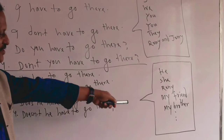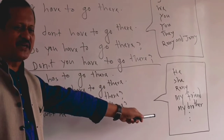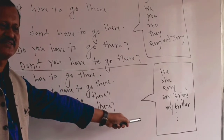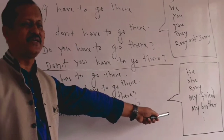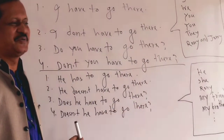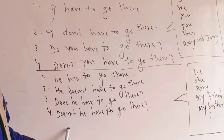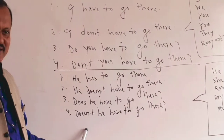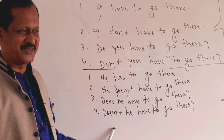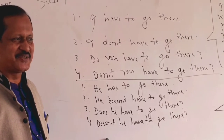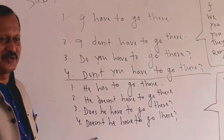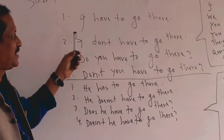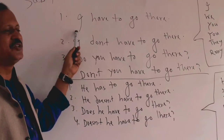My friend, my brother, mother, my sister, my cousin — these are singular relationships. When the subject is a singular third person — like friend, brother, mother, sister, cousin — 'has to' is used. So let's practice a little bit.